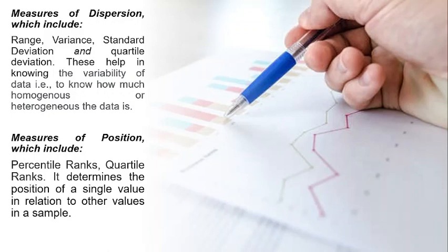The last one is the measure of position. It helps us to know the position of a single value in relation to other values in a sample. So percentile ranks and quartile ranks are used to know the position of data.